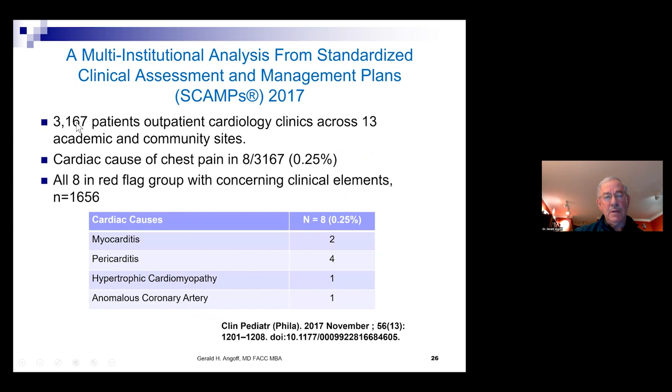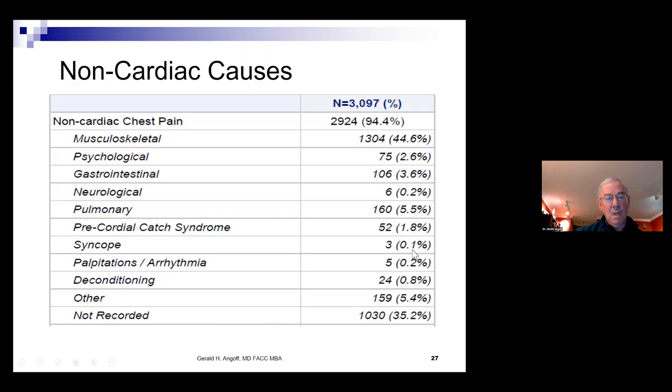A follow-up to that study, this was now in 2017, a follow-up again using this practice guideline from Children's Hospital. Now over three thousand patients, a cardiac cause was found in zero point two five percent and the same cardiac findings profile: myocarditis, pericarditis, hypertrophic cardiomyopathy, and one anomalous coronary artery. And again, those non-cardiac causes most commonly musculoskeletal, GI and pulmonary of those causes that were identified.